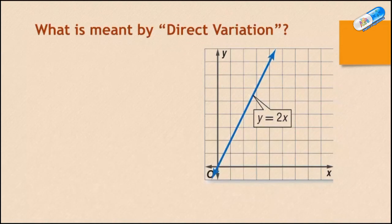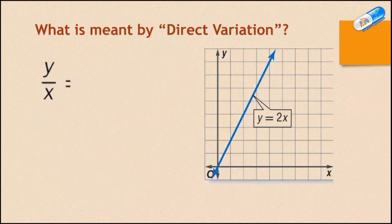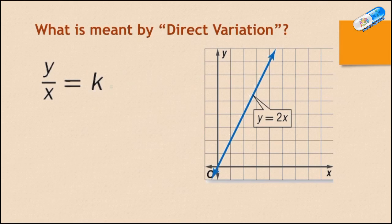First, what is meant by direct variation? As you see in this graph, direct variation is a linear relationship where the ratio of y to x is a constant k. We say y varies directly with x. So here we have y equals 2x. This means that y over x equals the constant k, and in this case k is equal to 2.